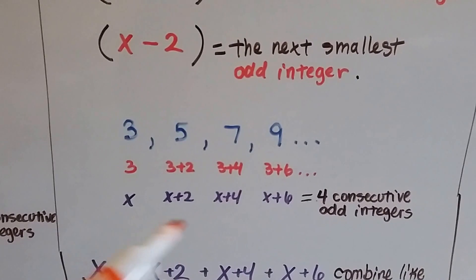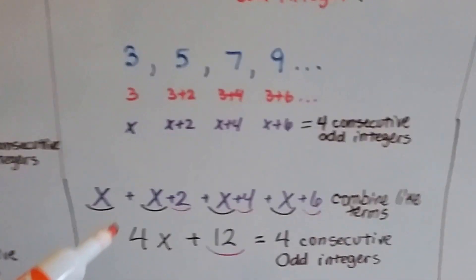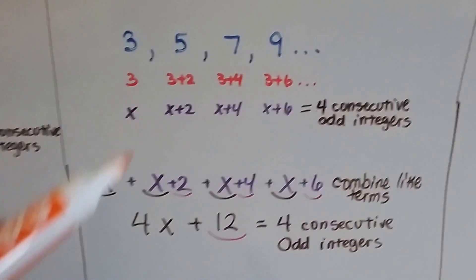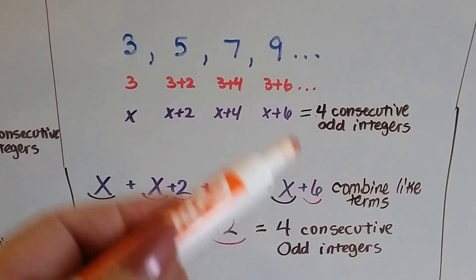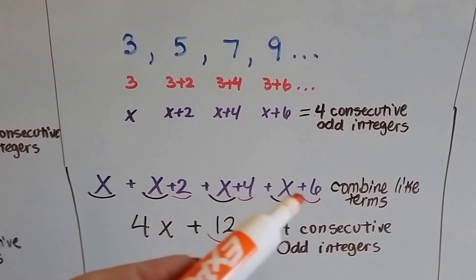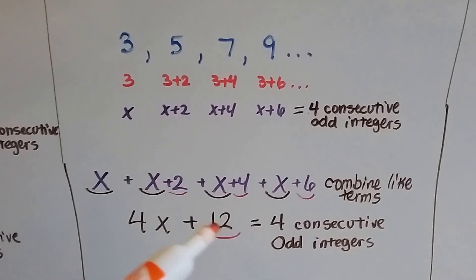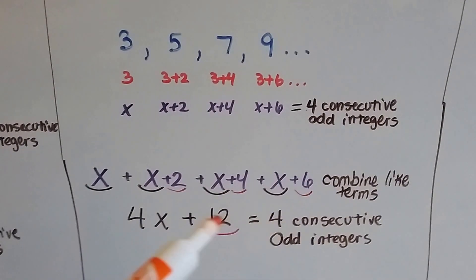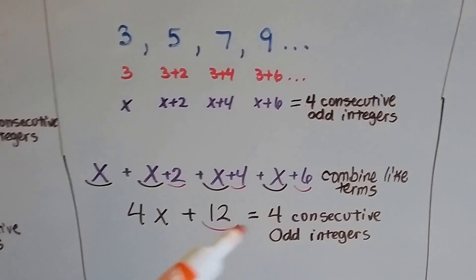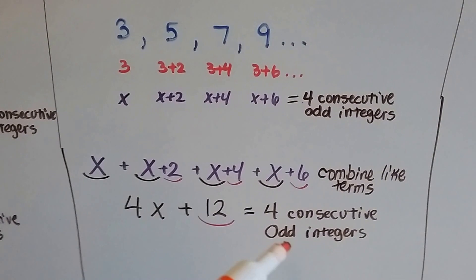We can combine the like terms, x, x plus 2, x plus 4, x plus 6. We have 4 x's plus 12. 2 and 4 is 6, plus 6 is 12. That is the equation that will get us 4 consecutive odd integers.